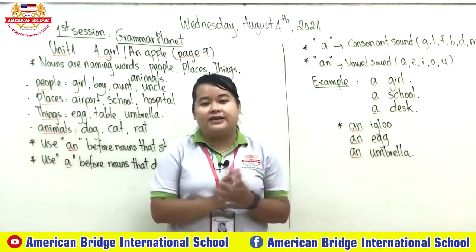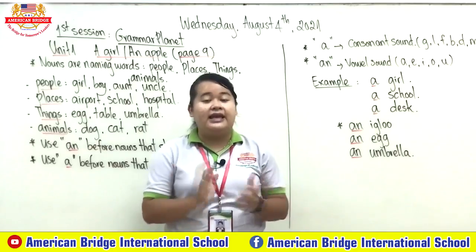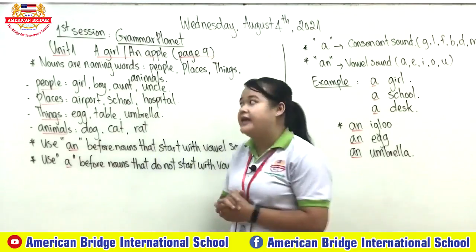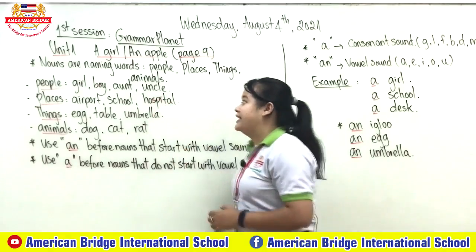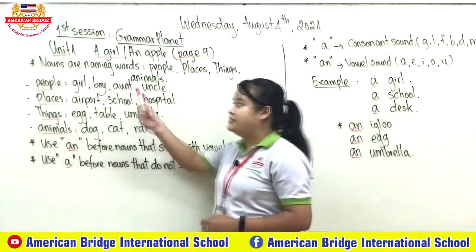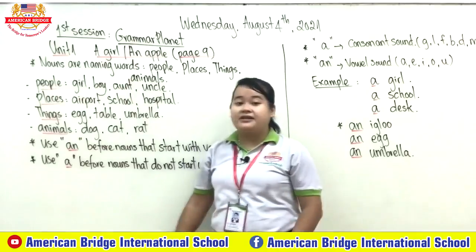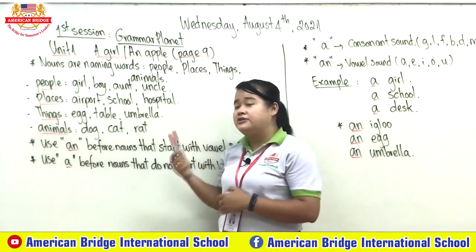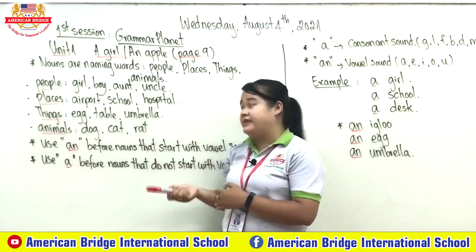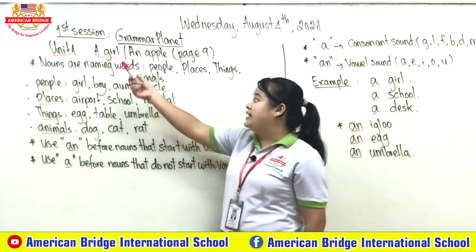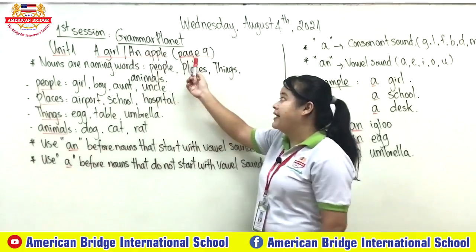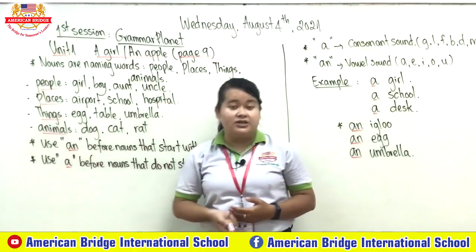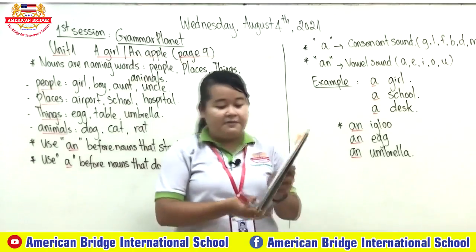Today is the first day for our new lesson in Grammar Planet One, and we focus on Unit One. You can see at our whiteboard — Unit One is about nouns, and how to use 'a' and 'an'. For example, 'a girl' or 'an apple', on page nine. Let's open your book to page nine together.